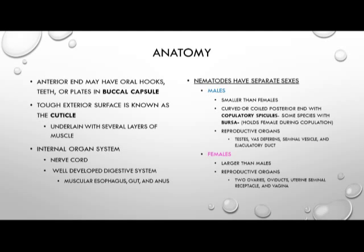The reproductive organs of the male include the testes, vas deferens, seminal vesicle, and ejaculatory duct. The females are larger than the males, and their reproductive organs include two ovaries, oviducts, uterine seminal receptacles, and a vagina. This concludes part one of three of class Nematoda. We'll pick this back up with class Nematoda part two.